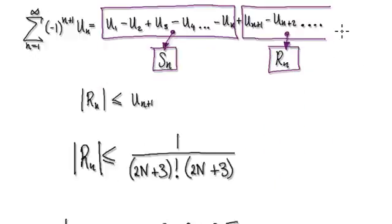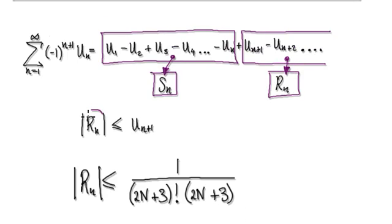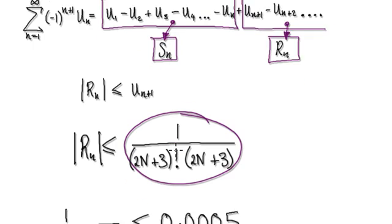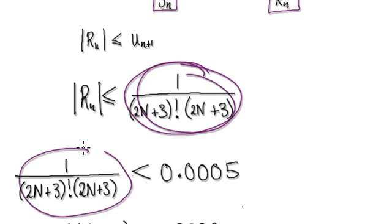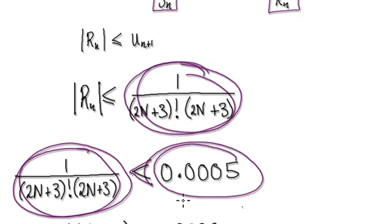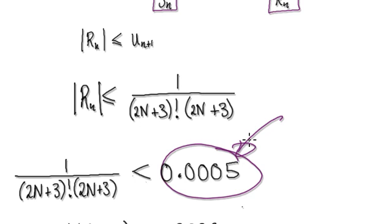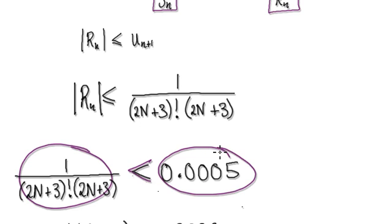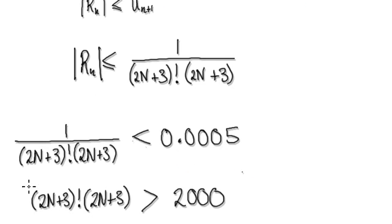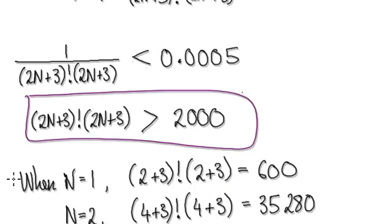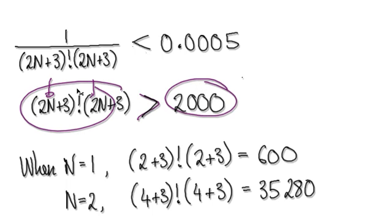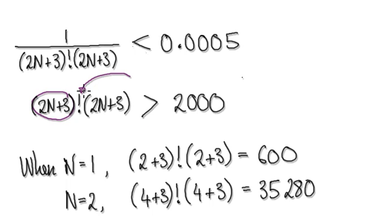So u_{n+1} is this thing here. The remainder is less than or equal to u_{n+1}, so this is our remainder. But we require our remainder to be less than this accuracy threshold from the previous video. So we take the reciprocal of both sides, and that gives us this. We are searching for a number N where this side would be bigger than this thing here.